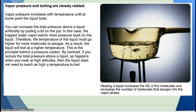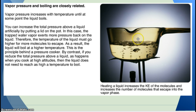Vapor pressure and boiling are closely related. Heating a liquid increases the kinetic energy of the molecules and increases the number of molecules that escape into the vapor phase. Vapor pressure increases with temperature until at some point the liquid boils. You can increase the total pressure above a liquid artificially by putting a lid on top of the pot — the trapped water vapor exerts more pressure back on the liquid, so the temperature must go higher for more molecules to escape. As a result, the liquid boils at a higher temperature. This is the principle behind a pressure cooker.